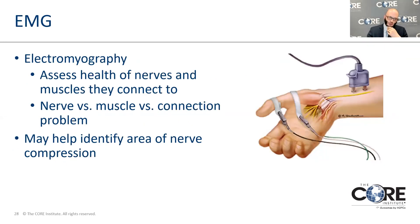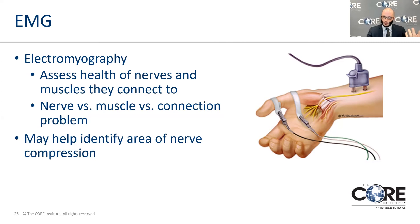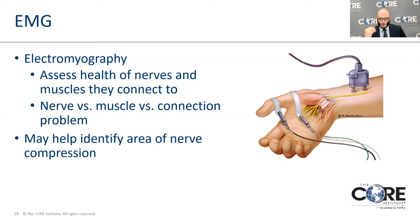EMG studies assess the health of nerves and the muscles they connect to, helping us identify nerve versus muscle versus connection issues, and may help identify areas of nerve compression. Nerves can be compressed in the extremity — not only in the neck. Carpal tunnel, or nerve compression at the elbow — just because you have numbness and tingling in the arm or hand does not mean it's necessarily coming from the neck.